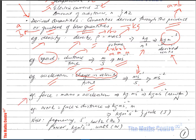Force is another important quantity. Force equals mass times acceleration (F = ma). Mass is in kilograms and acceleration is in meters per second squared. Therefore, the base units for force are kilogram meter per second squared, and one kilogram meter per second squared is called one newton.